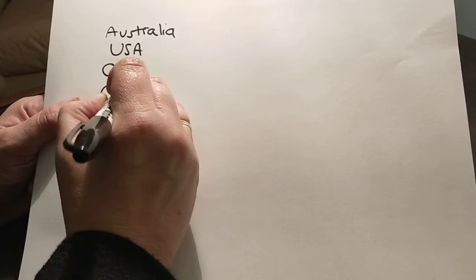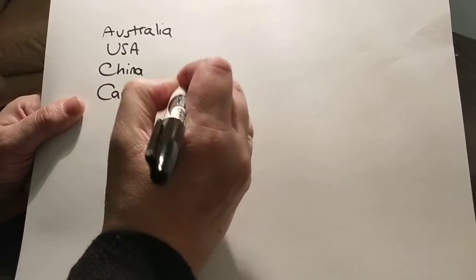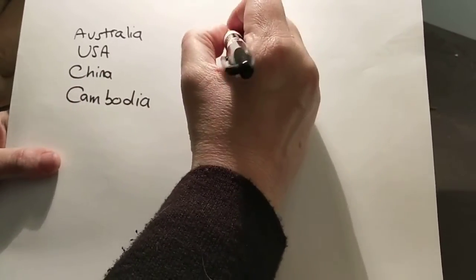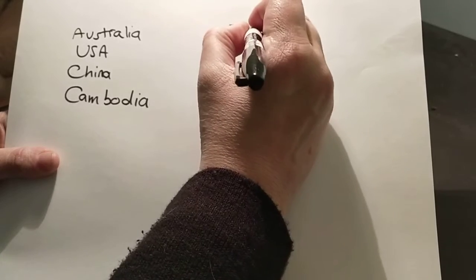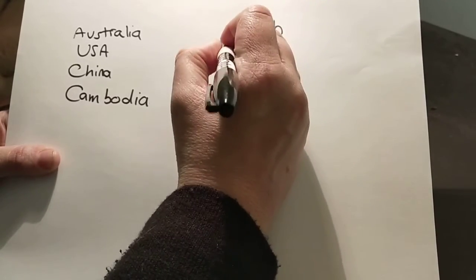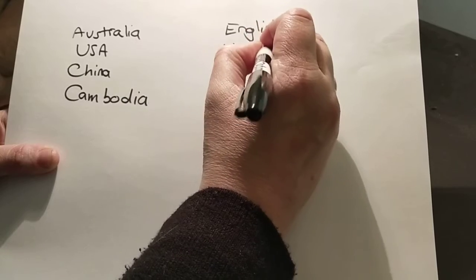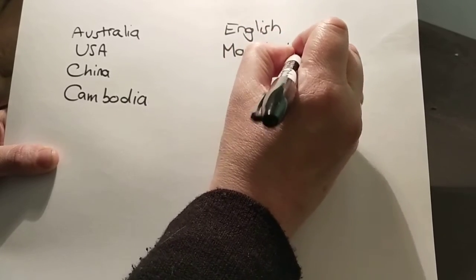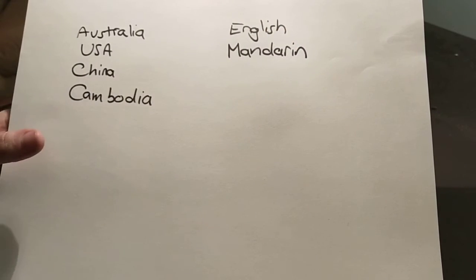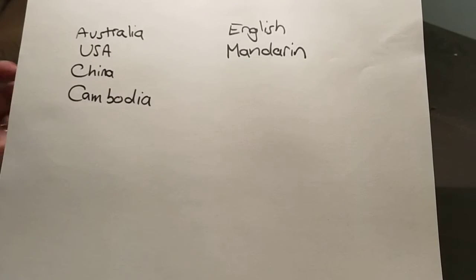Then you might ask them: what languages do you speak, or what languages do you feel a connection to, what languages have you learned? It may depend on the child which languages would count for them — this is all about what they feel is part of their identity. So I'm writing down English and Mandarin.